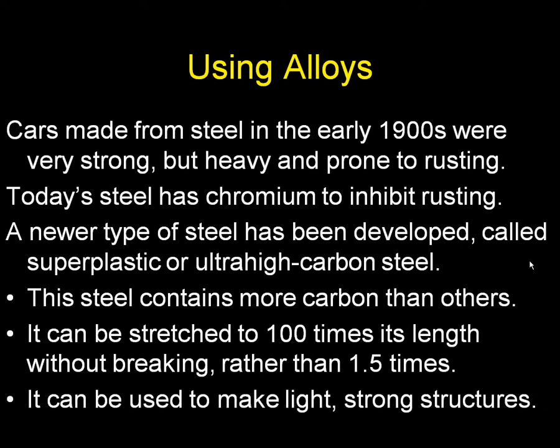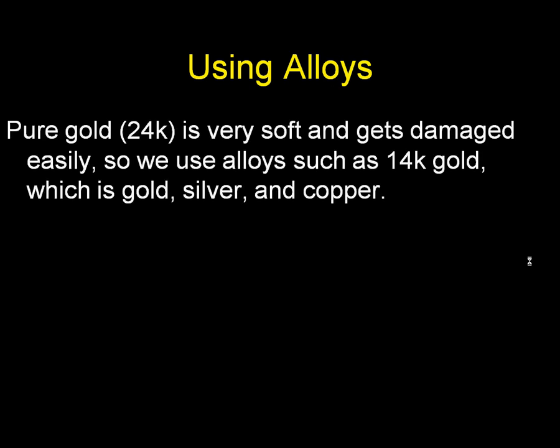Superplastic steel is useful because it can be used to make light, strong structures. Another alloy is gold — pure gold is called 24 karat gold, and it's very soft, so it gets damaged easily. We usually use alloys such as 14 karat gold, which contains gold, silver, copper, maybe platinum and iridium in it.